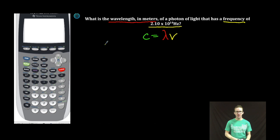The speed of light is a constant 3.00 times 10 to the 8 meters per second. We are looking for our wavelength. That's our unknown variable. We know the frequency is 2.10 times 10 to the 14 hertz.